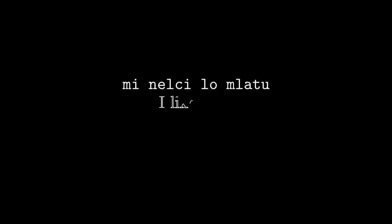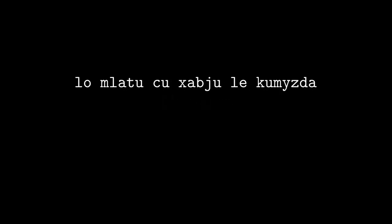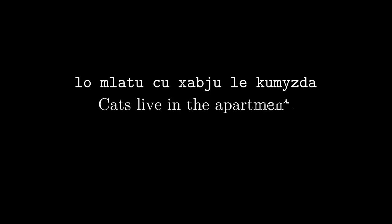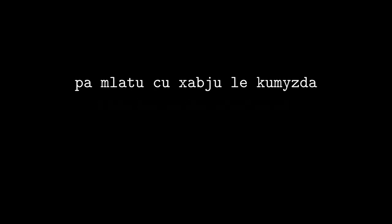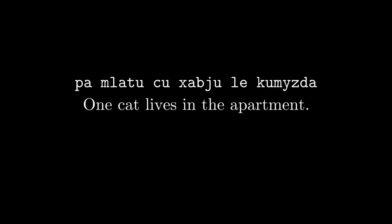Although lo is like the English 'a', in English this implies one. With lo, the number is actually unspecified, so it could be a cat or just cats in general — as in 'mi nelci lo mlatu', I like cats, or 'lo mlatu cu xabju le kumizda', cats live in the apartment. If you really want to specify one and only one, then you can say 'pa mlatu cu xabju le kumizda', one cat lives in the apartment, which is the same in English as 'a cat lives in the apartment'.